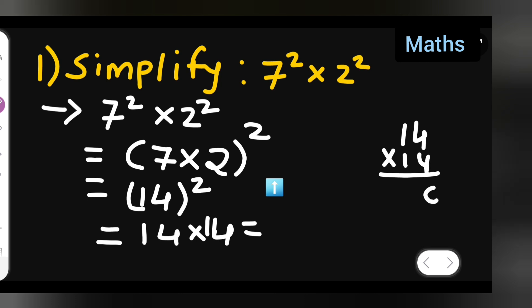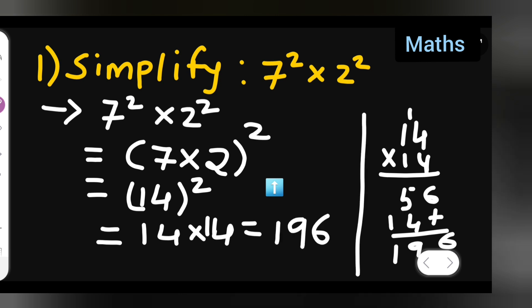4 4s are 16, 4 1s are 4, 5. Plus, 4 1s are 4, 1. Then, 6, 9 and 1. Basically, my answer is 196. So, you can write down 1, 9, 6 is your answer. This is the rough part.